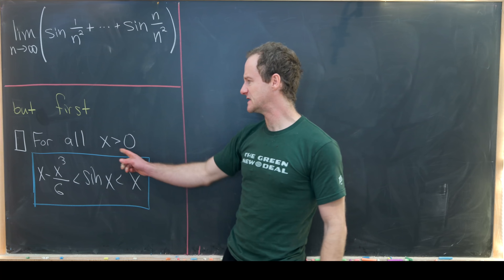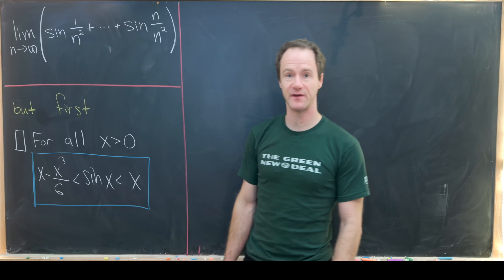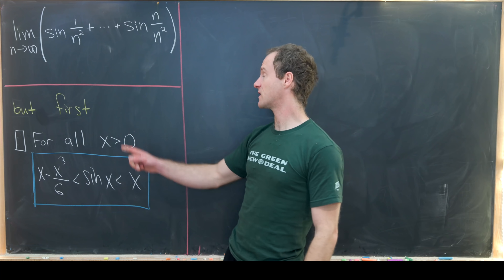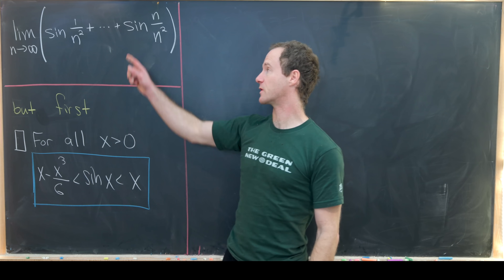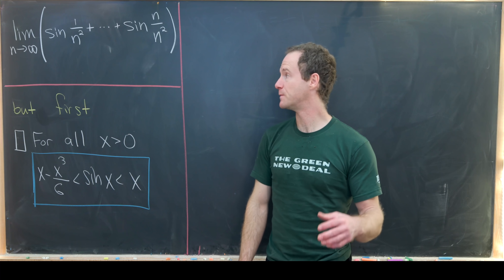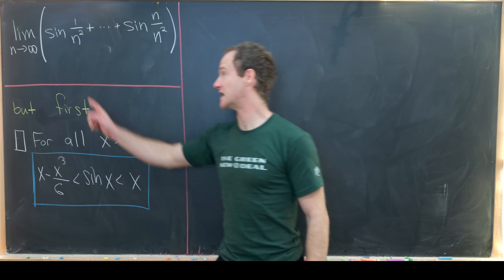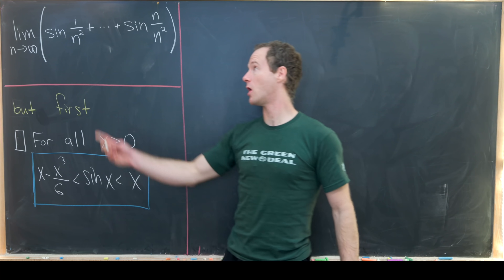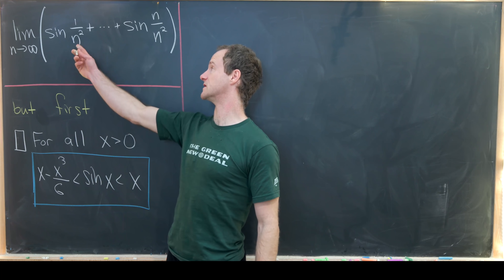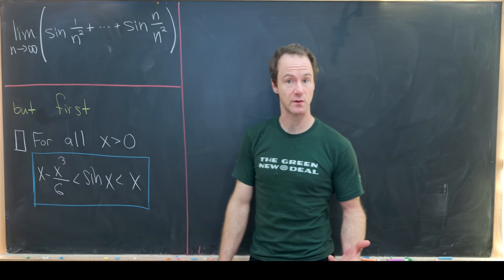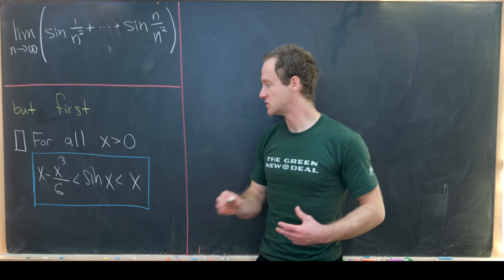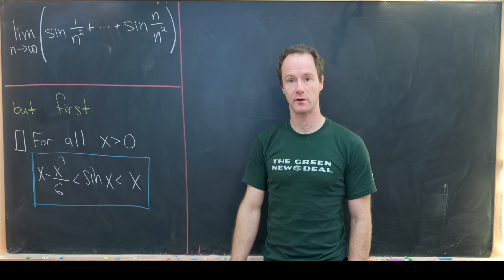These types of values of x will definitely work with the values we are plugging into sine, because as n goes to infinity, all of these arguments are positive: 1 over n squared is positive, 2 over n squared is positive, and so on and so forth.